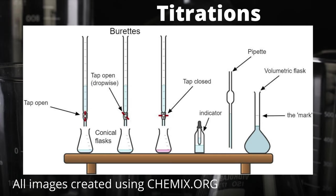Now what we've got on screen is something you wouldn't be expected to draw for the examination, but you definitely need to know a lot about — it's the titration. For a titration we use a wide range of equipment which includes, as you can see on screen, a burette, conical flask, some indicator, a pipette, and very often a volumetric flask as well.